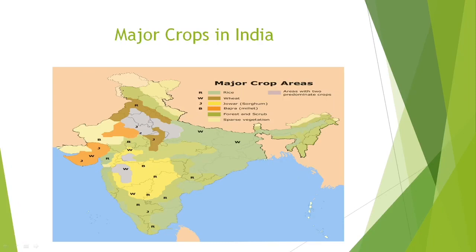Another thematic map shows major crops. For example, rice-producing states are shown in a specific color, and you can also see other crops like fruits shown on the map.